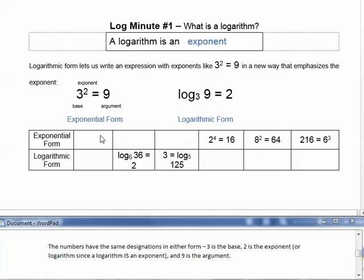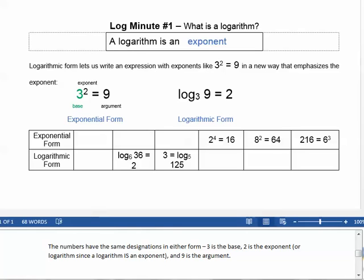The numbers have the same designations in either form. 3 is the base, 2 is the exponent, or logarithm, since a logarithm is an exponent, and 9 is the argument.